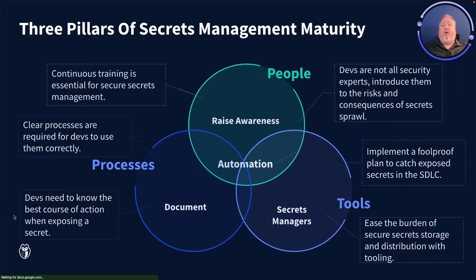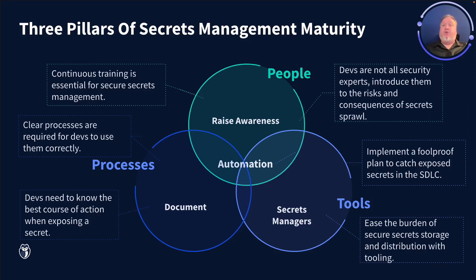At GitGuardian, we think that one of the key signs you're on your way to secret management maturity is being able to automate your processes. Secret management maturity consists of people accessing the right tools and using them within the right processes. You can purchase all the right tools, but unless you also combine those tools with the right processes, it's very hard to get the results you ultimately want. Without repeatable processes, it's impossible to achieve automation.